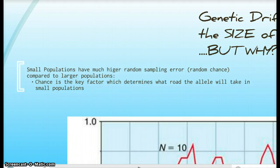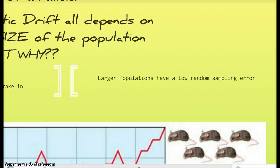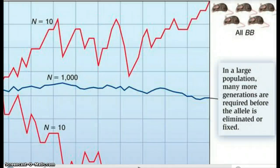Larger populations have a lower random sampling error, which pretty much means they have a higher allele frequency. But genetic drift favors small populations because it wants change.